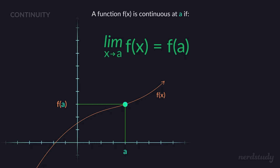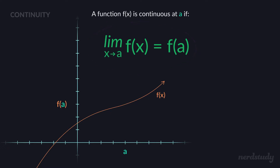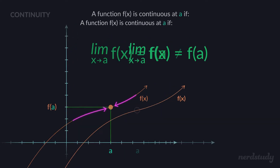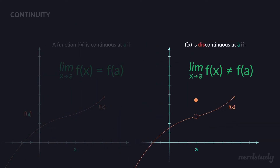This is essentially the same as our casual approach — being able to strike through from before a to after a without lifting our pencil. Starting from one side and striking through that point is exactly that, because what this is saying is: approaching from the left side gives a certain value, approaching from the right side gives the same value, and the value of the function when x equals a needs to also equal that same value.